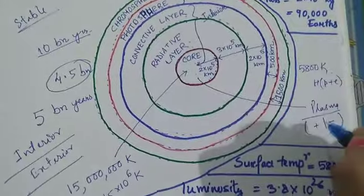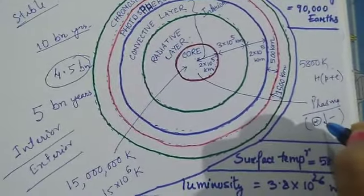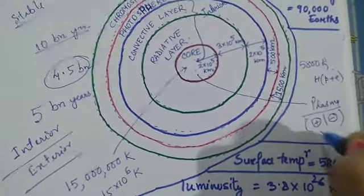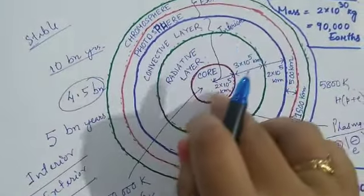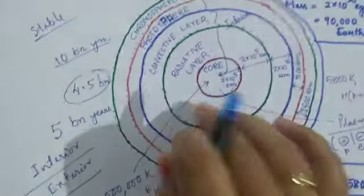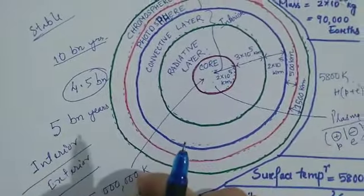So the temperature is so high that every atom will be broken, it will release one electron and immediately become a positive ion with a proton and electron. So the core is nothing but a plasma of protons and electrons.